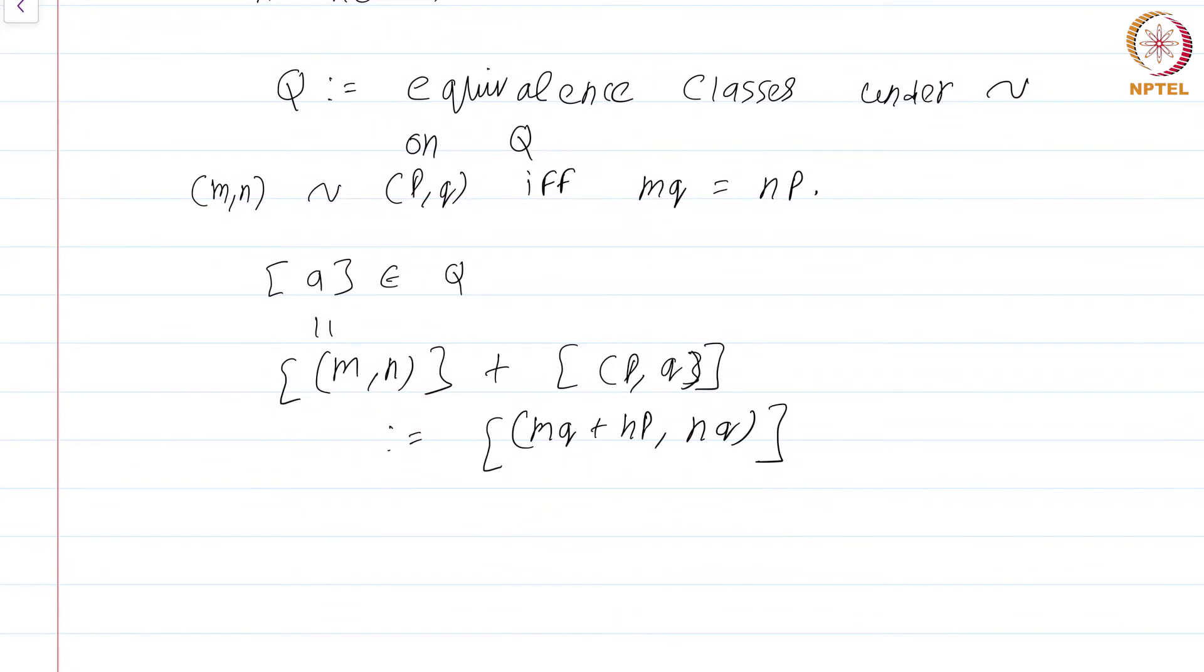The only issue that arises is that this equivalence class can be represented by any particular member of that equivalence class. That means I could have represented this (m,n) as (2m, 2n), nothing is stopping me from doing that. And I could have represented this (p,q) as (3p, 3q). Both are exactly the same equivalence classes.